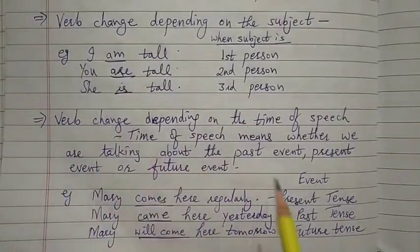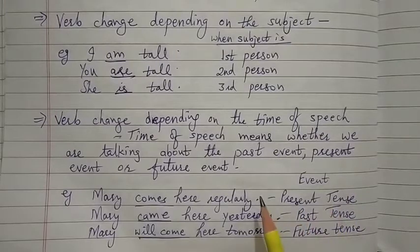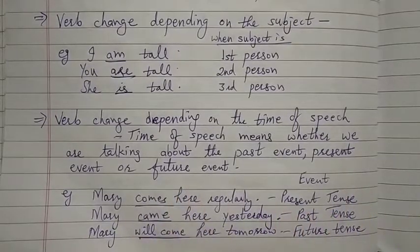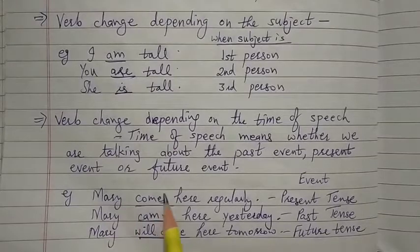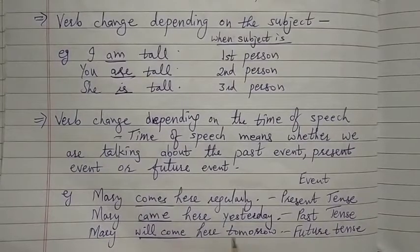A verb also changes depending on the time of speech — whether we are talking about a past, present, or future event. For example: 'Mary comes' is present tense, 'Mary came here yesterday' is past tense, and 'Mary will come here' is future tense.